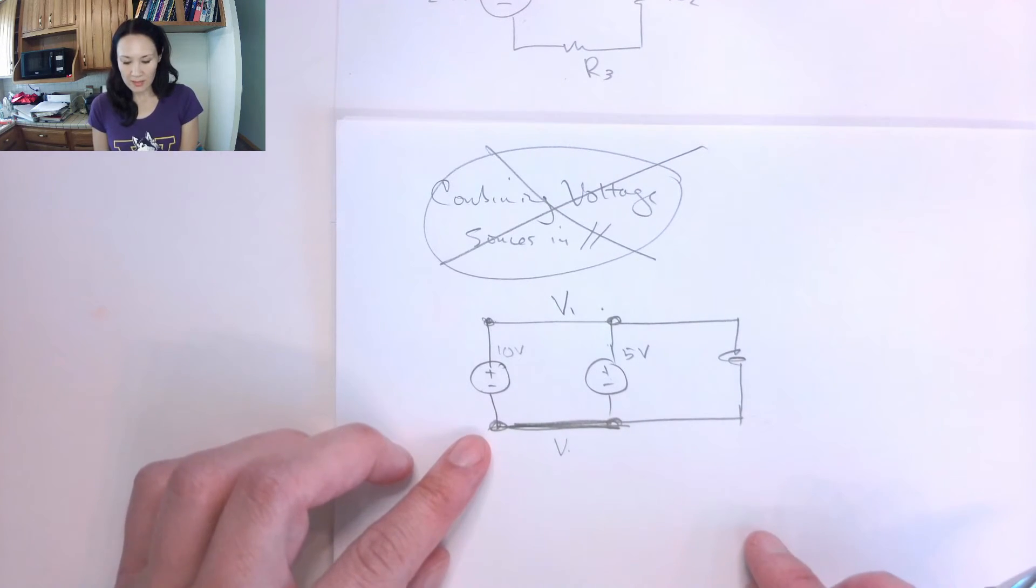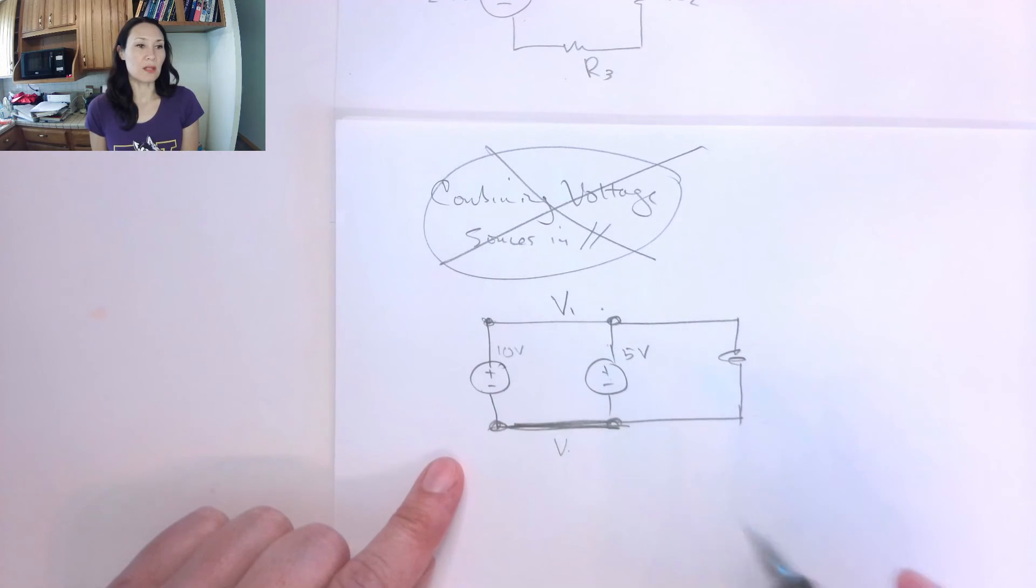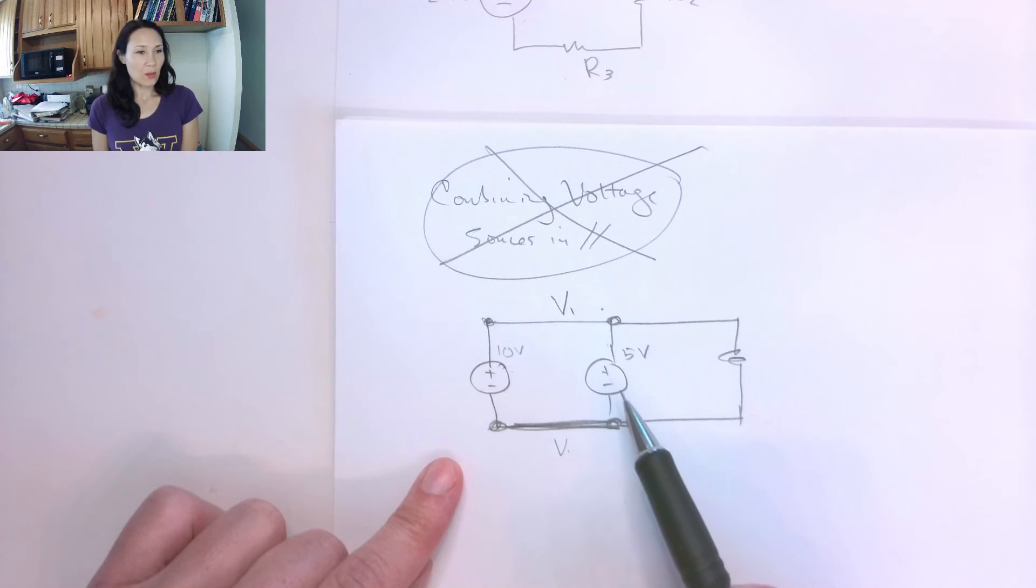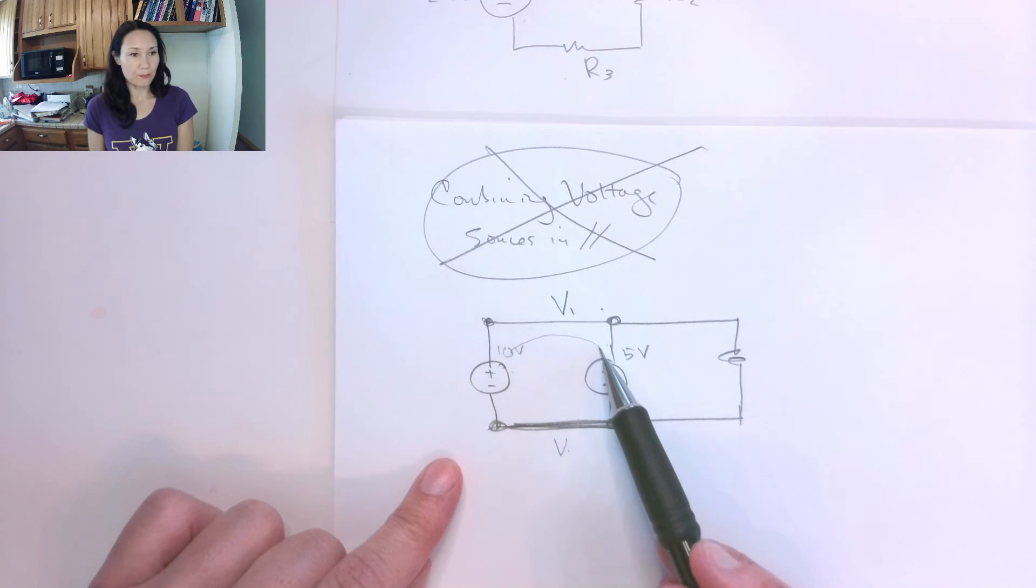The other problem is, from a practical standpoint, if you do end up doing something like this, whichever is the more powerful voltage source is going to see the other voltage source as like another resistor in the circuit. So it's going to see this as like a load to which this source is going to want to deliver current to.